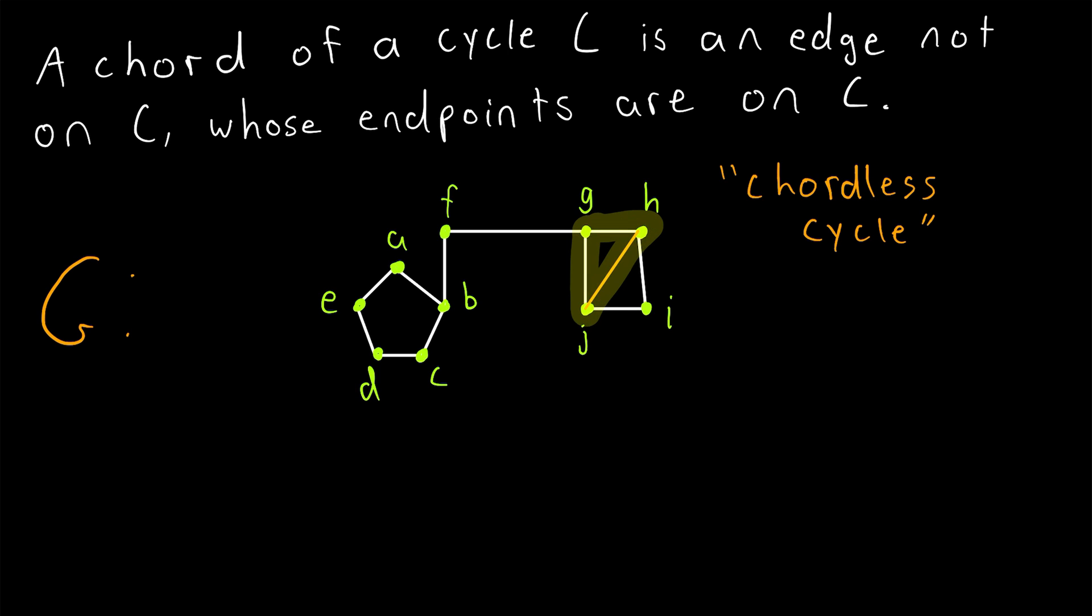This cycle with three vertices, G, H, and J. But a cycle with three vertices, we actually don't refer to as a chordless cycle.